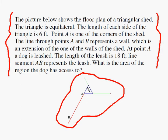What's going on here is we have a triangular shed and this is an equilateral triangle and each side is six feet and this is a wall and the dog cannot go through the wall, the dog cannot go through the shed.